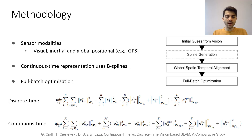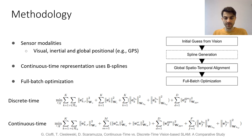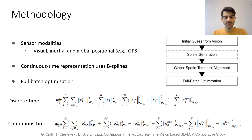In our experiments we consider three sensor modalities, or any combination of these, which are visual, inertial, and global positional. We use B-splines to represent the camera trajectory in continuous time, and all measurements are fused in a full batch optimization.